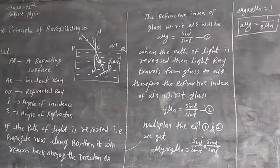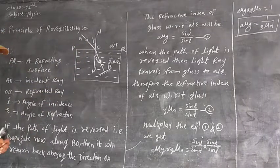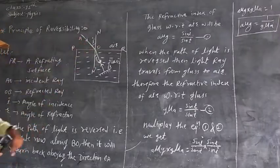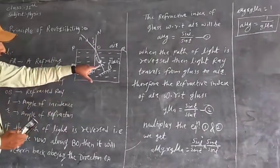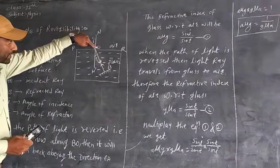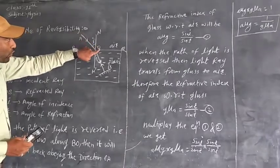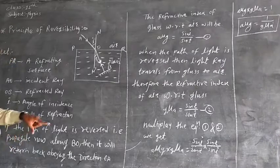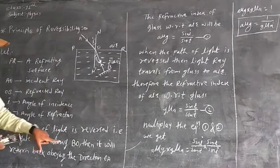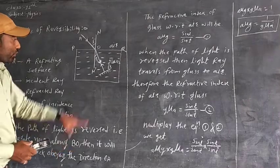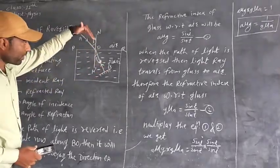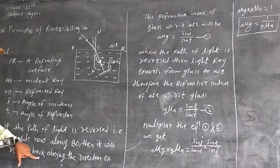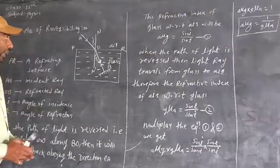Then, if the path of light is reversed — that is, it goes in the opposite direction — first it was going in direction R, then the O-A direction returns. In this direction, B-O becomes the incident ray and it will return back, obeying the principle of reversibility.